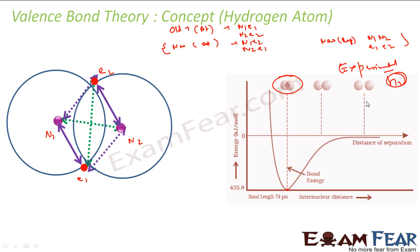What they have done is taken two hydrogen atoms and separated them. There is no energy between them at infinite distance. When they come together, the energy goes down, goes down, to a minimum level of -435.8 kJ per mole, and then it goes up again.